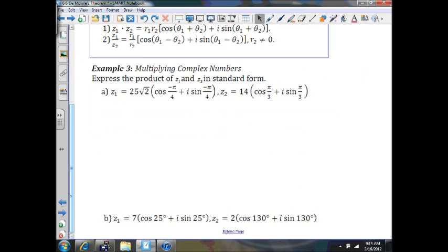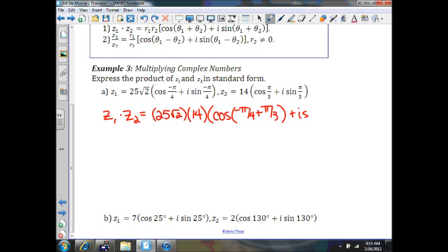So let's look at example three. Z1 times Z2. So Z1 times Z2 will equal 25 square root of 2 times 14 times cosine of negative pi over 4 plus pi over 3 plus i sine of negative pi over 4 plus pi over 3.